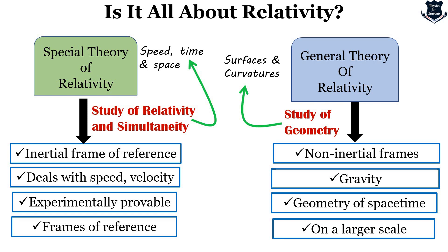So what is the inference we draw from here? Special Theory of Relativity is more about relativity, and General Relativity is more about geometry. The conclusion: less of relativity, more of geometry. It is not about relativity as a whole — yes, there is relativity — but it is more of the geometry and geometrical structure of spacetime, which found a paradigm shift. That is what marks the main central idea of General Relativity.